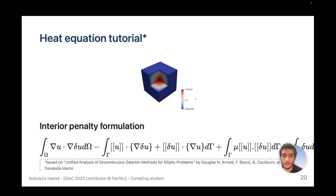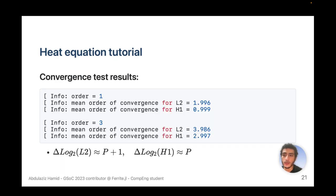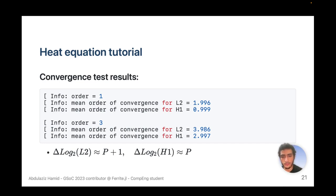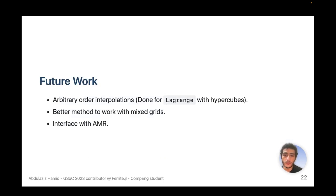We also implemented a heat equation tutorial based on the unified analysis paper, using the interior penalty method. The heat equation tutorial was tested for convergence and exhibited results similar to those in the paper. The convergence rate for the L2 norm was order plus one, and for the H1 norm was the order.